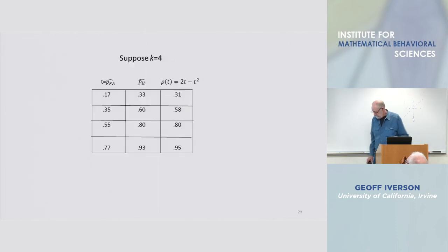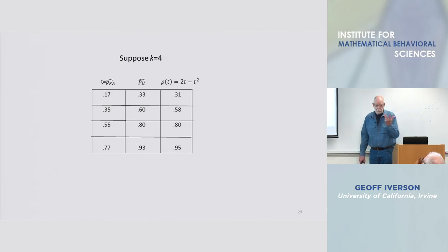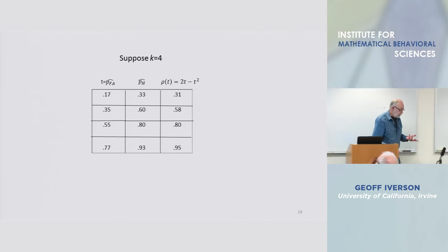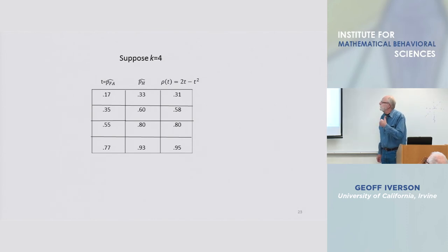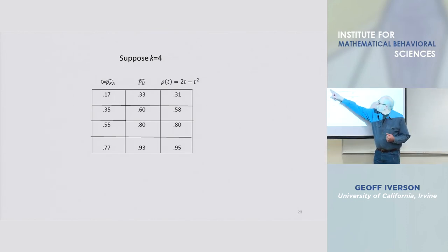And here's a simple numerical example. I took k equals 4, this is well within the ability of an experimenter. So here is values of the false alarm rate,